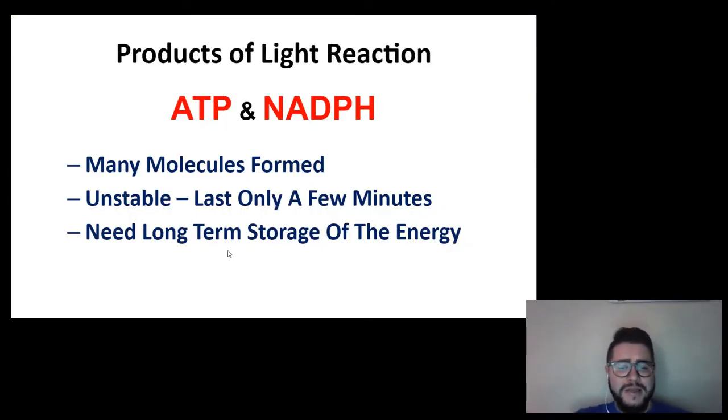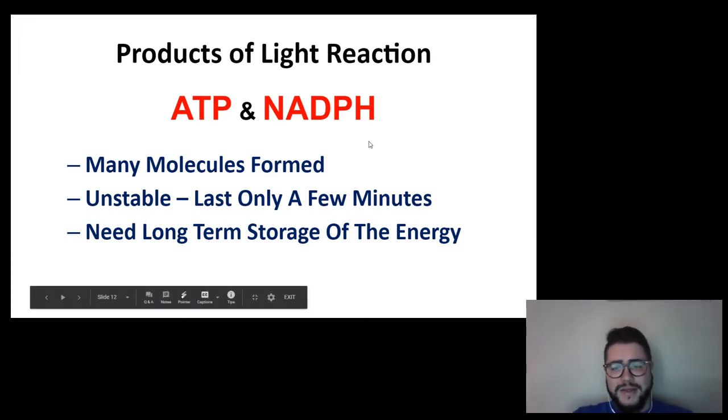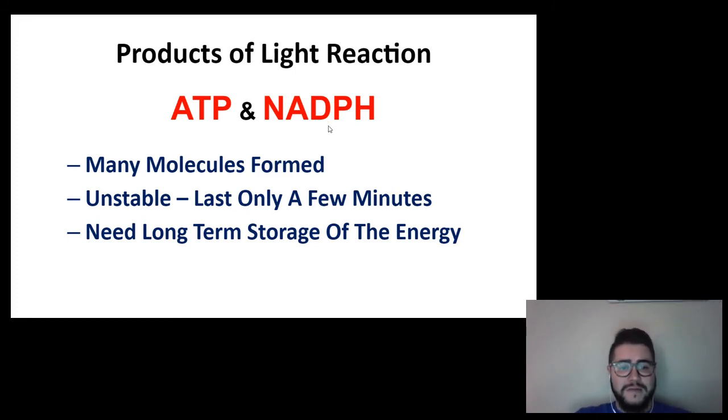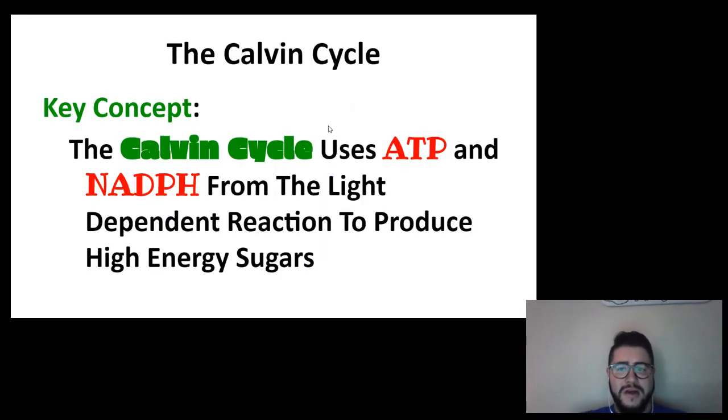A little bit about ATP and NADPH. During the normal day in a single plant cell, even in just a single chloroplast, many molecules of ATP and NADPH are made. But they're unstable, only lasting for a few minutes. So the plant cells need to make long-term storage energy molecules. That's where this Calvin cycle comes in.